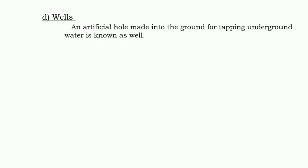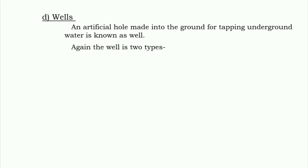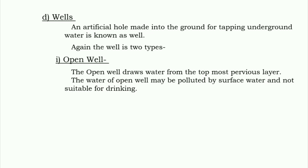An artificial hole made into the ground for tapping water is known as a well. Wells are of two types. First is open well — the open well draws water from the topmost pervious layers. The water of open wells may be polluted by surface water and is not suitable for drinking.